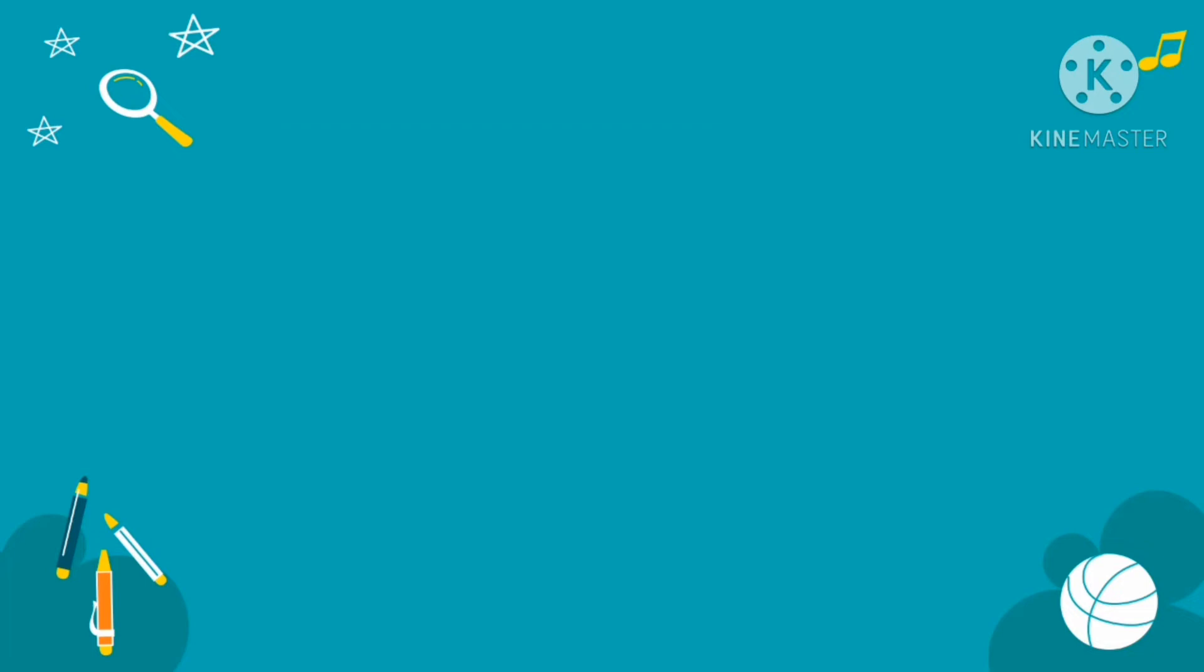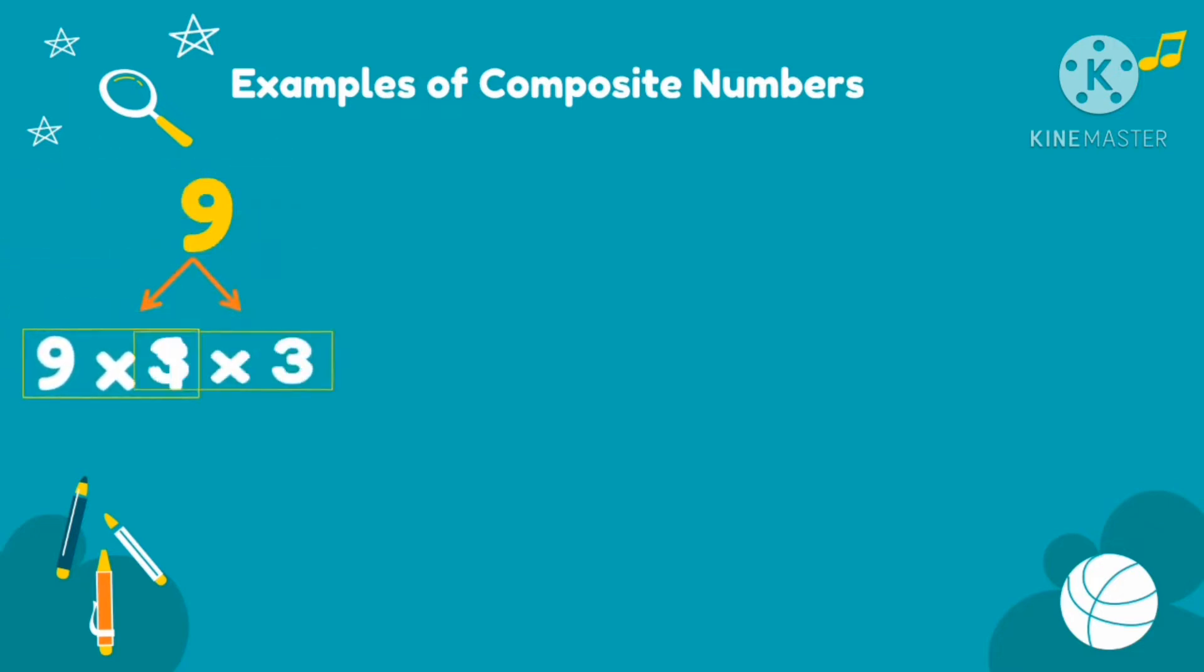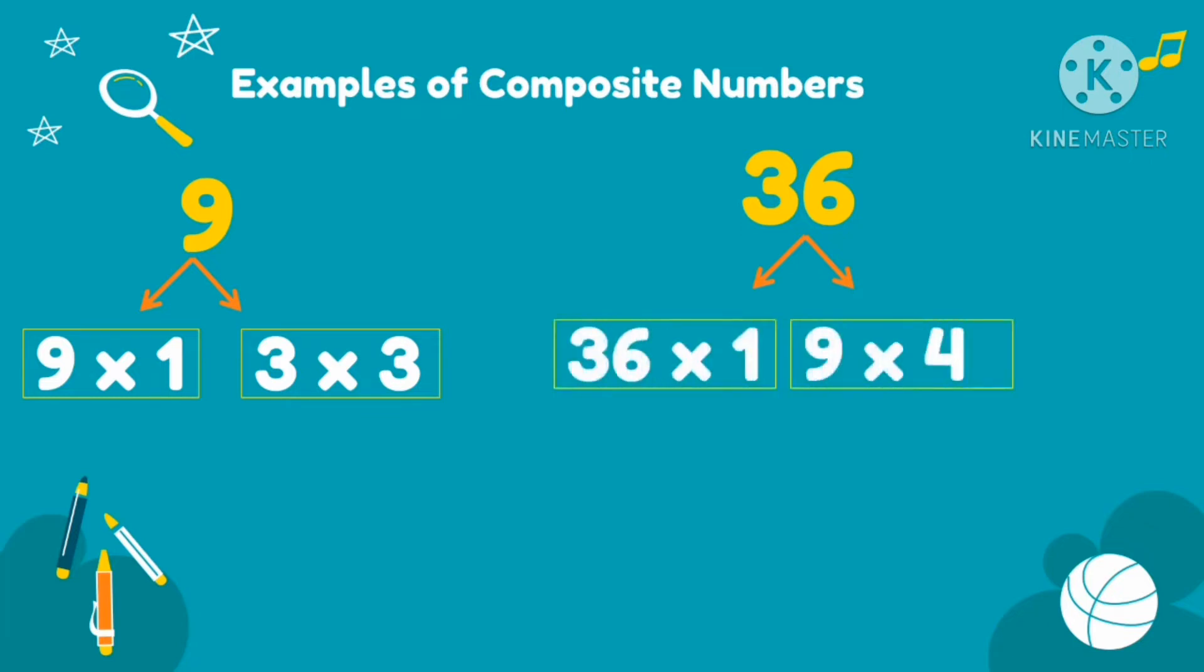Here are some examples of composite numbers. So we have 9. What are the factors or numbers that when we multiply them will give us an answer of 9? So we have 9 times 1 and 3 times 3. Then another one is 36. So think of a number that when multiplied, the answer is 36. So we have 36 times 1, 9 times 4, 12 times 3, and 6 times 6.